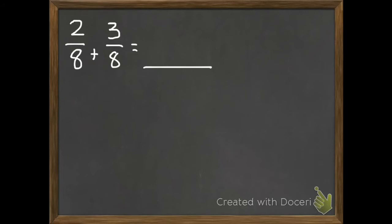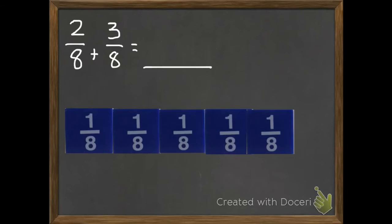So I have two eighths plus three eighths. If you want to draw that really quickly, you can. So here's two eighths. Then I want to add three more eighths. And at least do this part with me. How many eighths do we have all together?